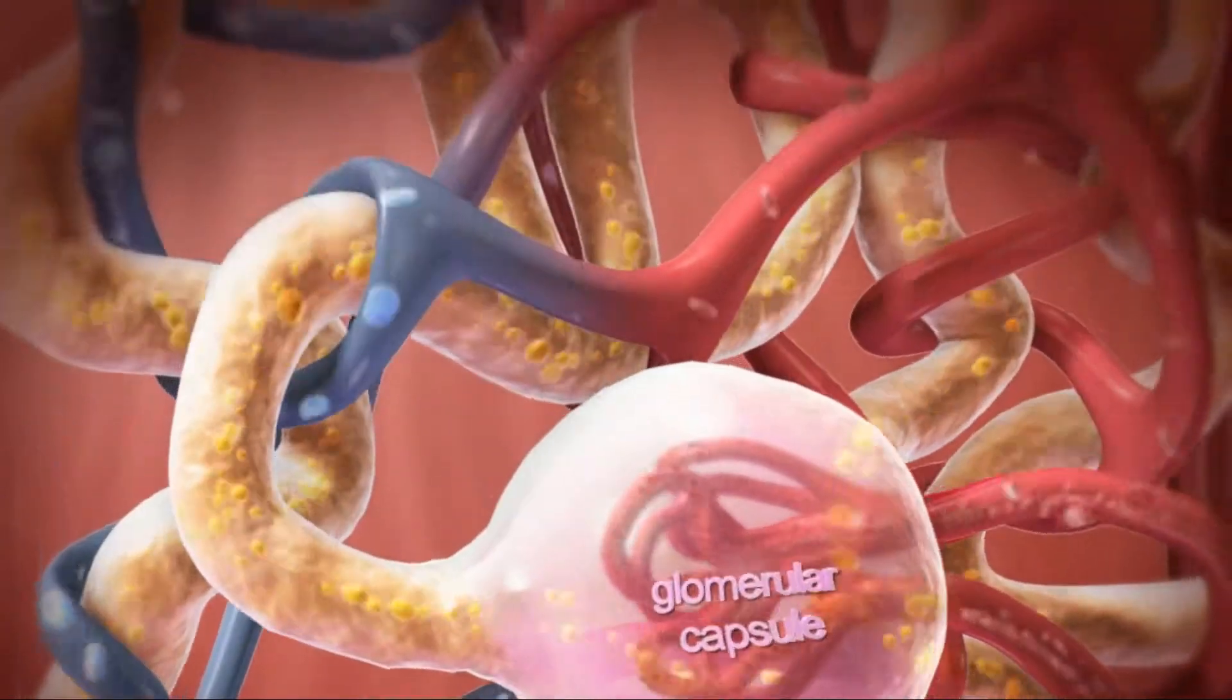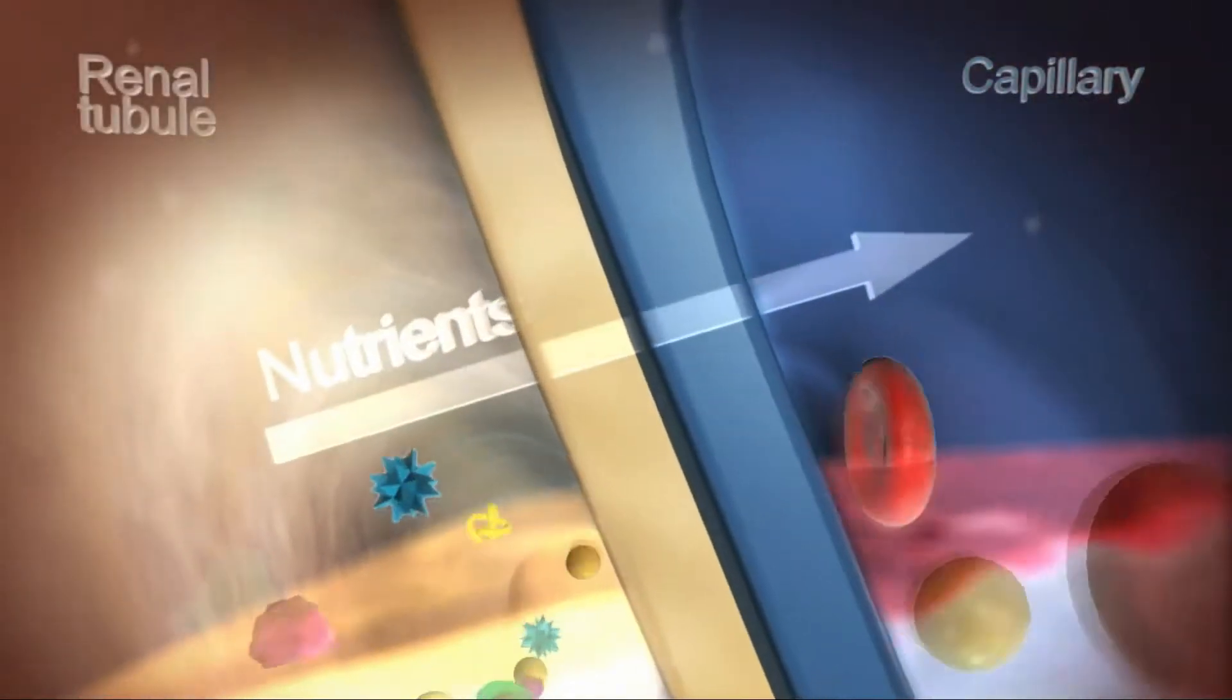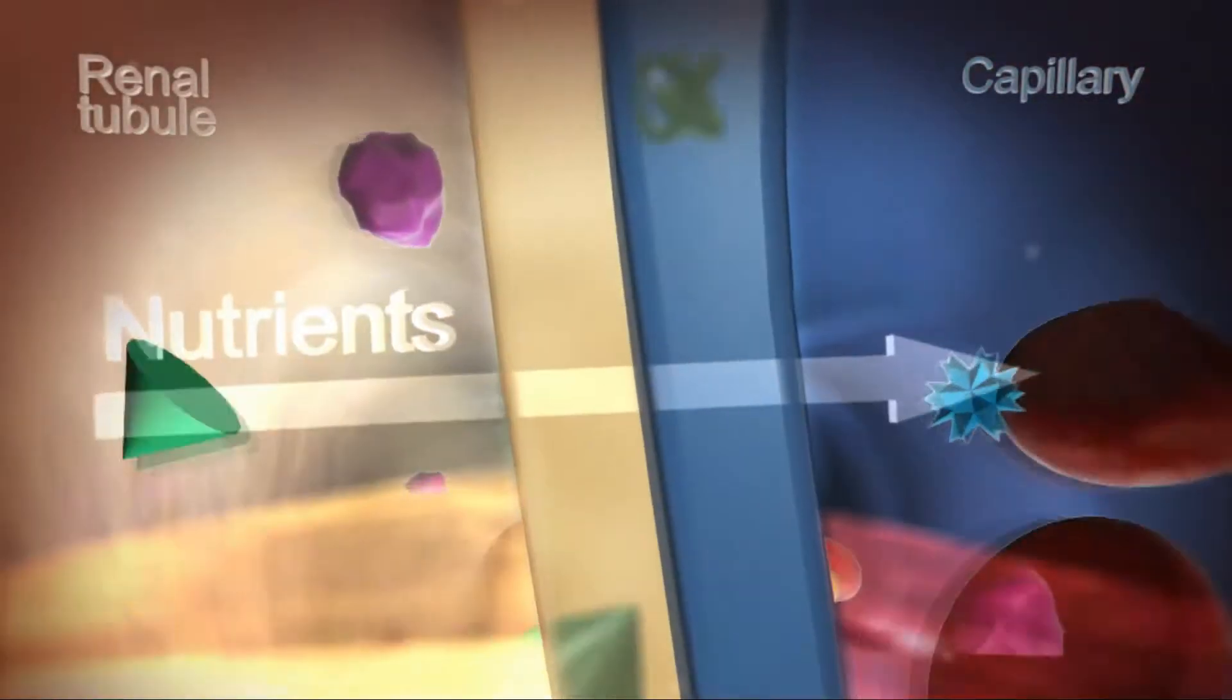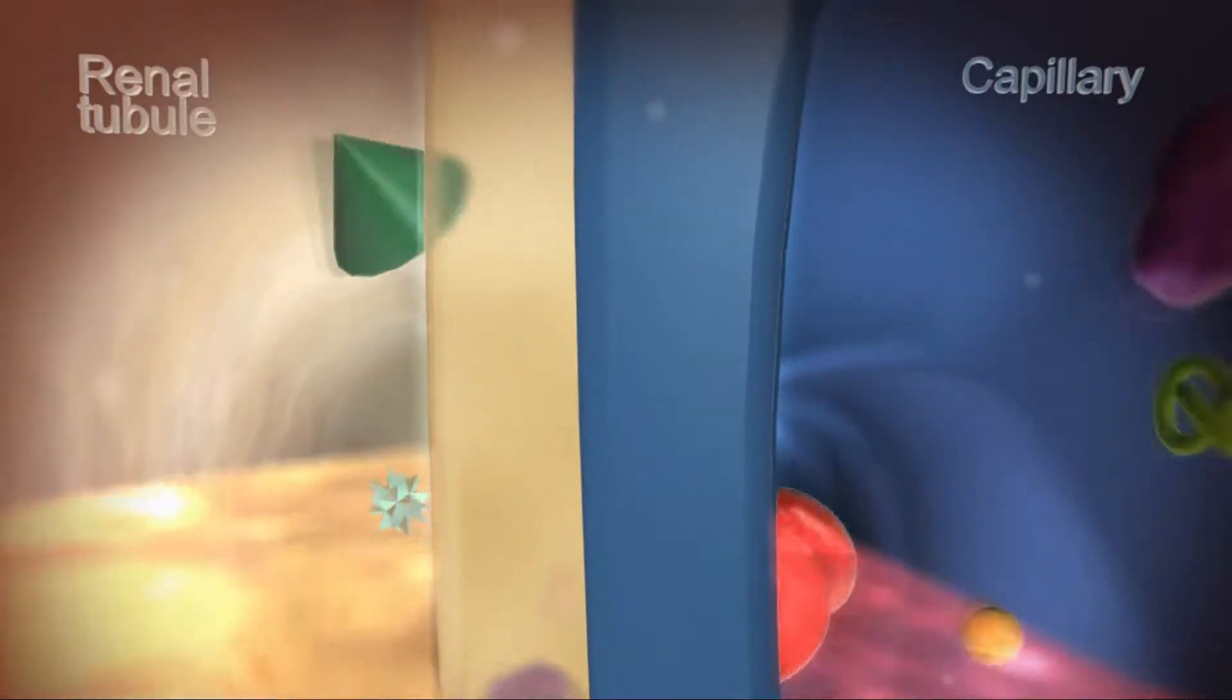As the filtrate passes out of the glomerular capsule and through the renal tubule, substances like water, essential ions, glucose, amino acids, and proteins are reabsorbed into the body through cells along the tube wall.